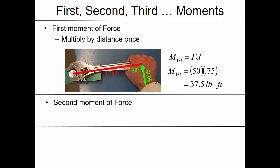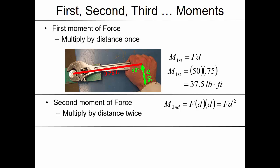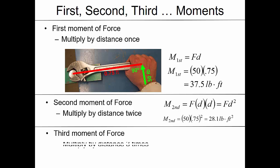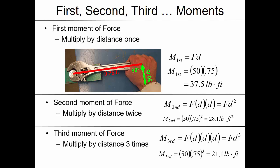If I want to find the second moment of the force, I simply multiply by the distance twice. The second moment would be the force times the distance squared, or 50 times 0.75 squared, which gives 28.1 pound-feet squared. If I want the third moment of the force, I multiply by the distance three times — the force times the distance cubed — giving 50 pounds times 0.75 feet cubed, which equals 21.1 pound-feet cubed.